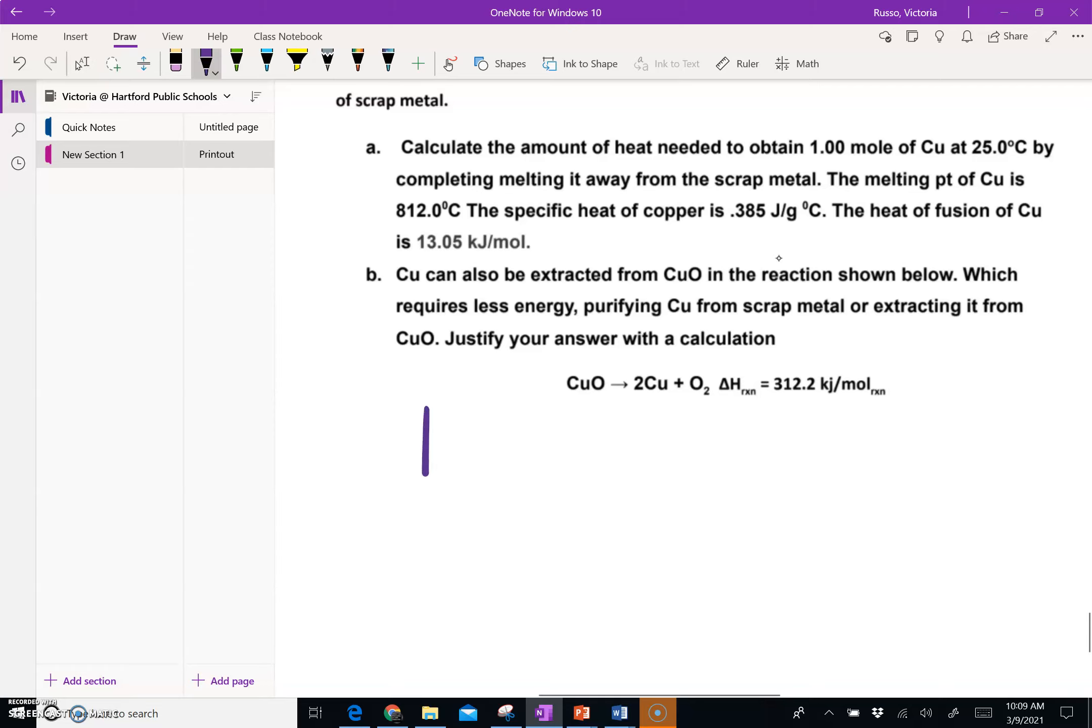In our heating curve, if we drew our heating curve, this is what it looks like. Our melting point is here which is 812, and we're somewhere down here at 25. We need to get from here where it starts melting to the point where it is already melted. So we are calculating along two lines, we'll call this line A and we will call this line B.